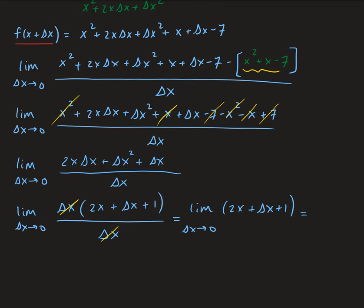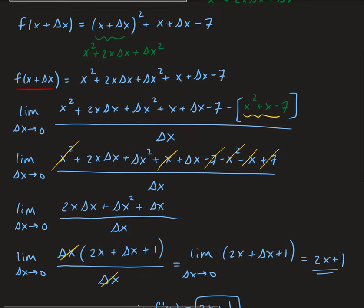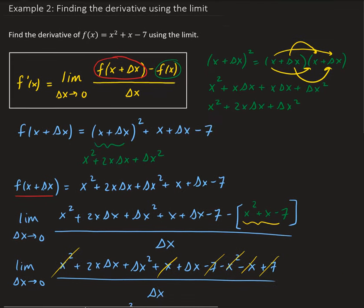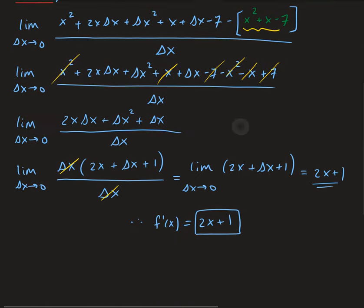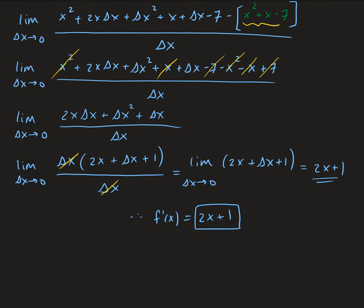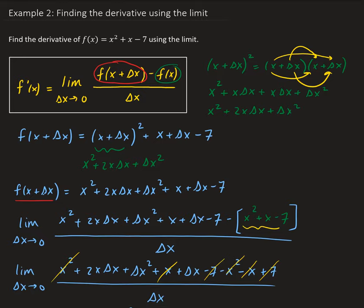This is going to give us 2x plus 1. Therefore, the derivative of our function is 2x plus 1. So the derivative of x squared plus x minus 7 is 2x plus 1. That's how you can use the limit definition to find the derivative.